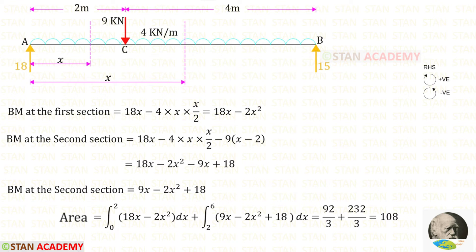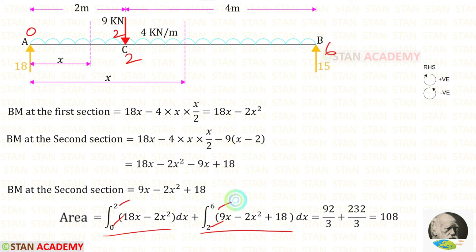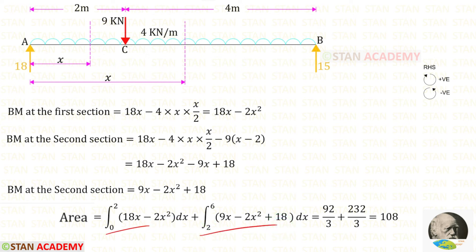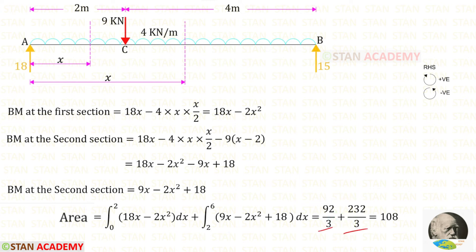Now let us find the area by integrating the moments over each section. For the first section the limit is 0 to 2, and for the second section the limit is 2 to 6. Using a calculator to perform these two integrations — see the description below for a link to that video if needed — we get the two values, and when we add them together we get 108.